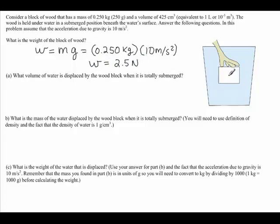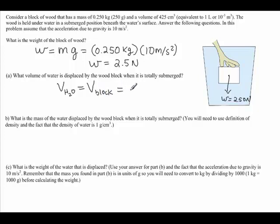In my picture I can draw a force representing the weight, which is 2.5 newtons. The next question asks: what volume of water is displaced by the wood block when it is totally submerged? If you totally submerge the block of wood, whatever the volume of the block is, that's how much water is displaced. So the volume of displaced water equals the volume of the block, which is 425 centimeters cubed.